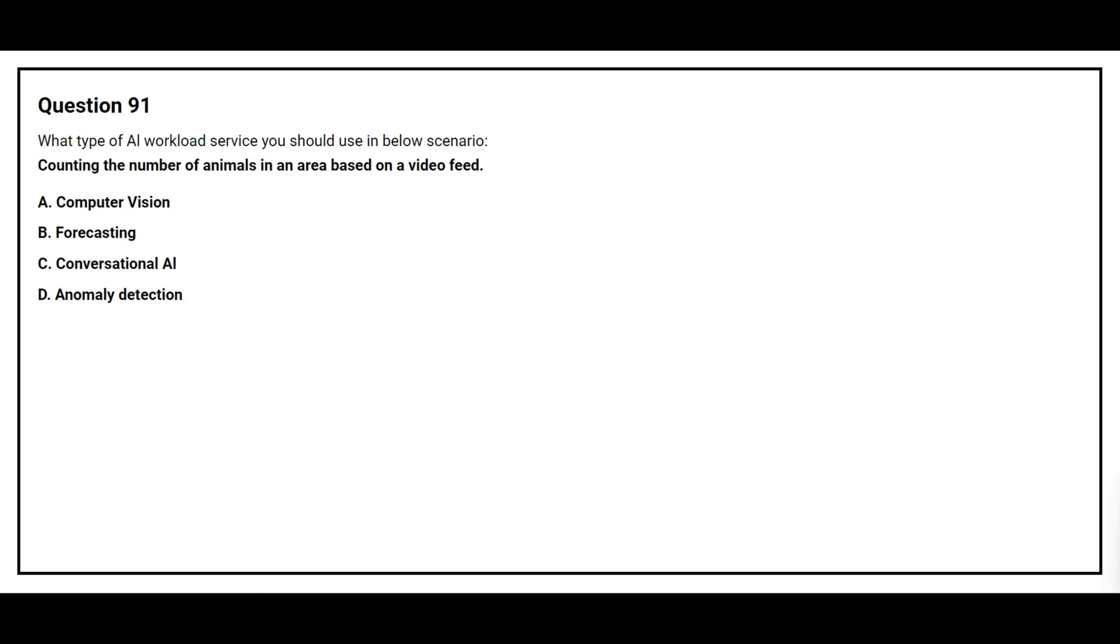Question number 91. What type of AI workload service you should use in below scenario? Counting the number of animals in an area based on a video feed. Option A, computer vision. Option B, forecasting. Option C, conversational AI. Option D, anomaly detection. The correct answer is option A, computer vision.